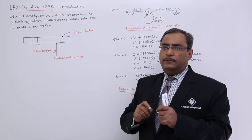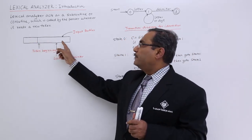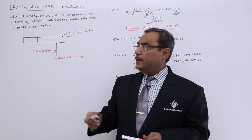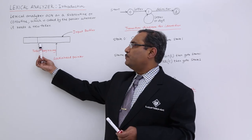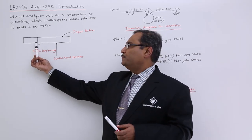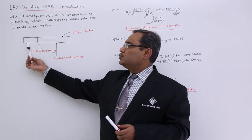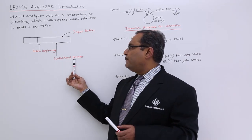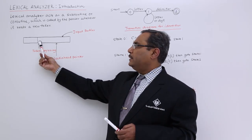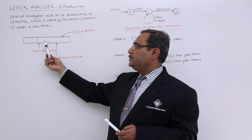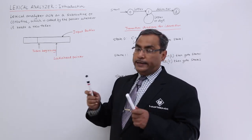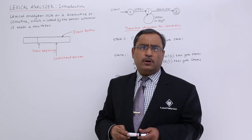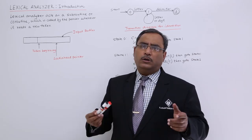How does it analyze the token? There is a particular buffer, also known as input buffer. Here we have kept one statement of the high-level language program, and there is a pointer known as the token beginning. It is pointing to the token beginning because prior to that we have recognized one token, so the next token will be starting after that. Another look-ahead pointer will be there, and it will proceed character by character and check whether there is a delimiter or not. Delimiter can be a punctuation symbol, can be one blank space, or whatever it is.